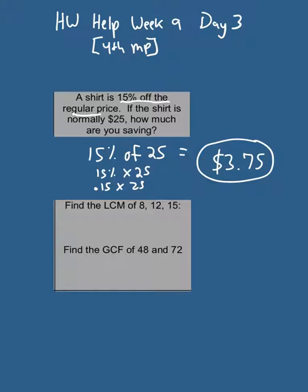Now in the next problem, it says find the least common multiple of 8, 12, and 15. And the bottom one says find the greatest common factor of 48 and 72. I'm helping you with this one because we haven't done LCM and GCF on homework for a while. So in least common multiple, you have to list.